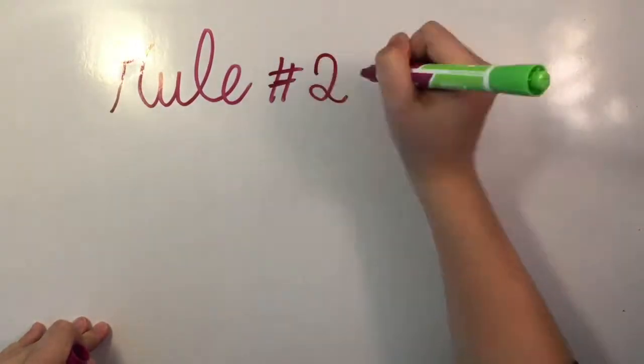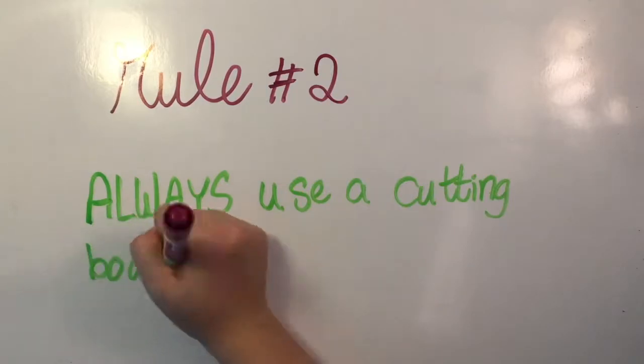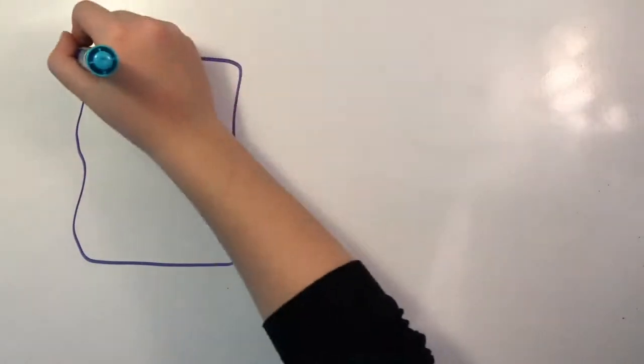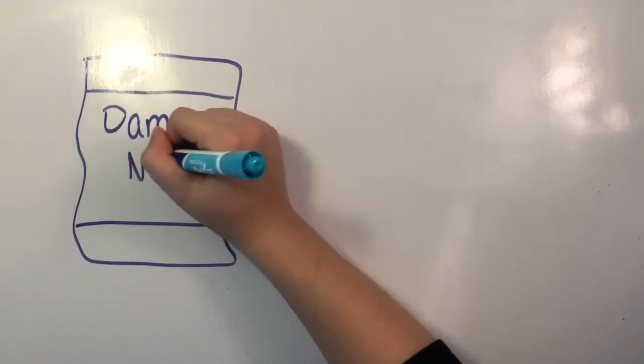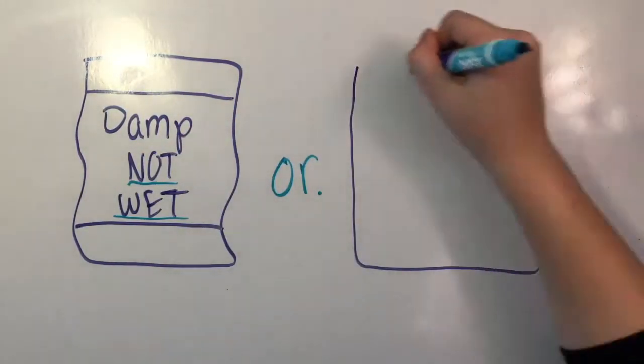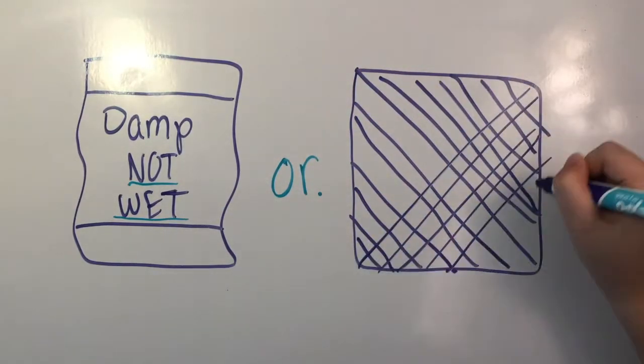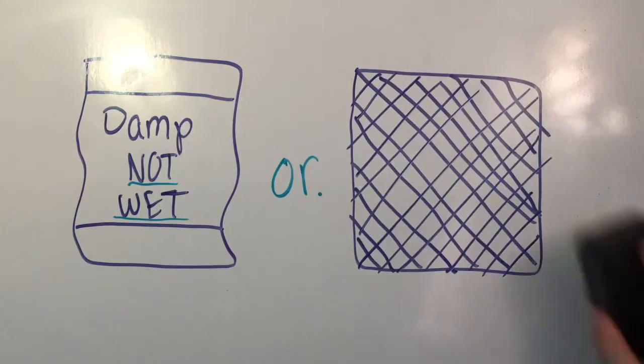Rule number two, always use a cutting board, never cut directly on a table. It dulls your knife and creates scratches. Also, before you start chopping anything, make sure you have a damp towel or sticky mat under your cutting board, just to keep it in place. Keep in mind, damp, not wet. A wet towel will make a mess of your workstation and probably won't do much to stabilize your cutting board.